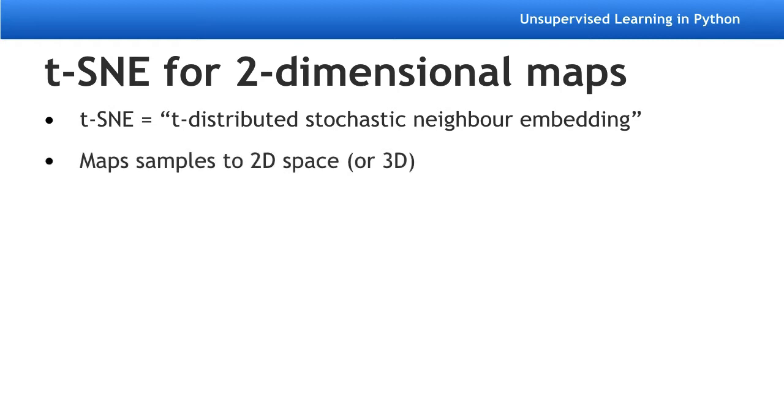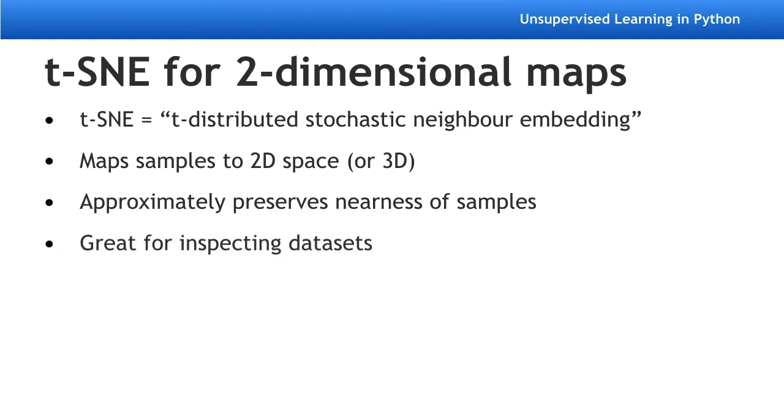It maps samples from their high-dimensional space into a two- or three-dimensional space so they can be visualized. While some distortion is inevitable, t-SNE does a great job of approximately representing the distances between the samples. For this reason, t-SNE is an invaluable visual aid for understanding a dataset.